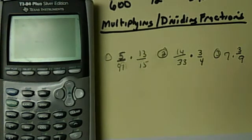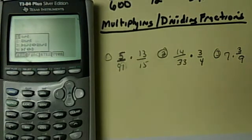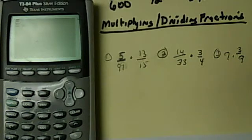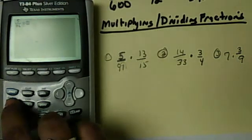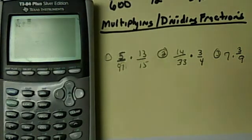That first one is written like this: 5 over 91 times 13 over 15. So I can go into, if you remember, my alpha Y equals and I can get that numerator denominator. Put in 5 down to 91 and I need to go over to put in my multiplication. Then I got to go back and get my little spots again so I go back to alpha Y equals number 1 like we did before, 13 over 15.